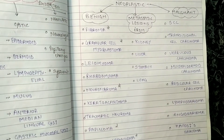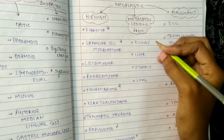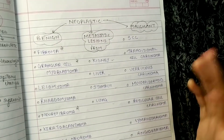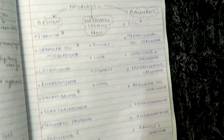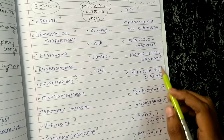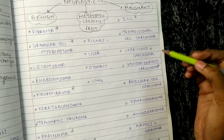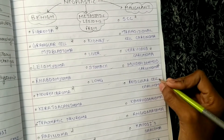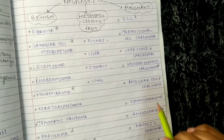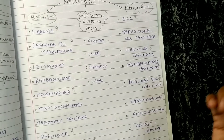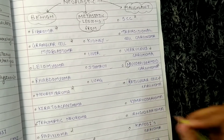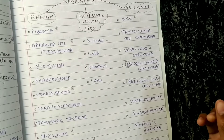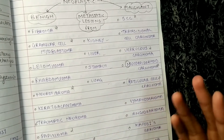Metastatic lesions can come from kidney, liver, stomach, and lungs. In malignant, squamous cell carcinoma is very important, transitional cell carcinoma, verrucous carcinoma — again very important — and mucoepidermoid carcinoma. For third year students, squamous cell carcinoma, verrucous carcinoma, and reticular cell carcinoma are very very important. In your oral pathology exam you should know their histology and draw the histological diagram. We also have lymphosarcoma, angiosarcoma, Kaposi's sarcoma, melanoma, and rhabdomyosarcoma.